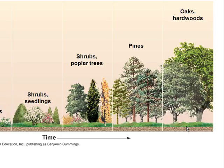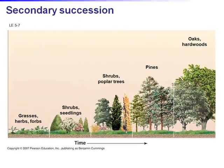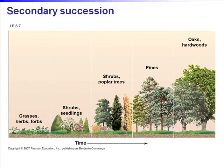Succession occurs as plants come in, change the community, and essentially make it so they can no longer compete with incoming species. In primary succession after a glacial event, the earliest species are likely organisms like lichens — mutualistic organisms of fungi and algae — which can live in harsh environments, secrete acid, and begin the process of soil formation in barren ecosystems.